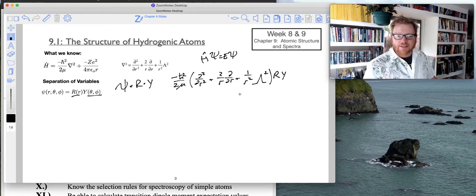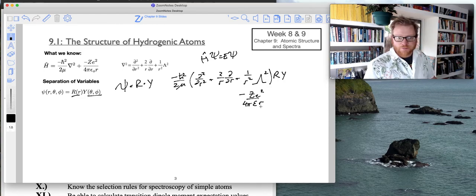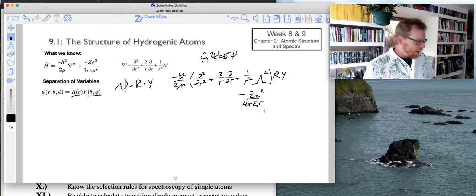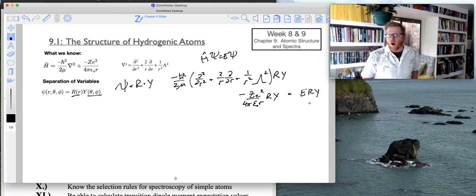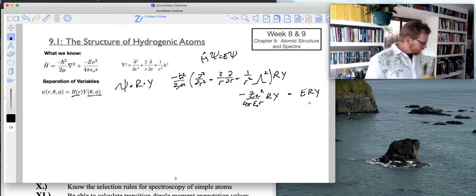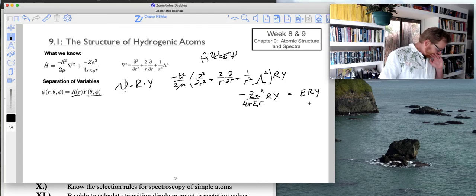And then now I can say minus the potential energy operator, which is going to be z e squared over 4 pi epsilon r, a little knot right there. And that's also times r y, and then that all equals e times r y. So there's our full Schrödinger equation.